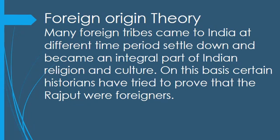The Rajputs have never considered themselves foreigners and hence rejected this theory. They traced their lineage from Surya and Chandravanshi clans. It is faulty to compare the traditions and customs of Rajputs to those of Shaka and Scythians, because those traditions existed even prior to their arrival in India. The prevalence of worship of Ashwamedha Yajna and worship of arms and weapons by the Kshatriya is testified from the epics.